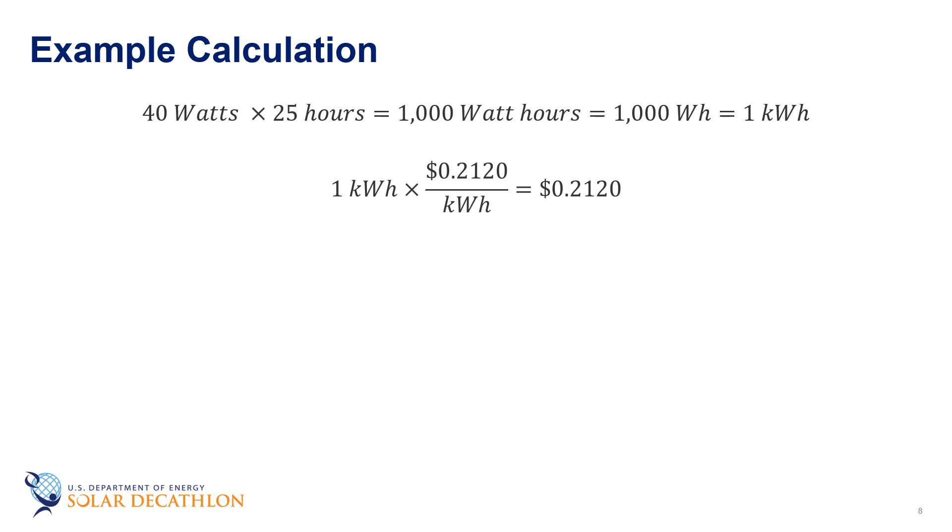So let's look at an example calculation. We'll use the same light bulb example that we previously used, a 40-watt light bulb operating for 25 hours. Again, by multiplying 40 watts times 25 hours, we get 1,000 watt hours or 1 kilowatt hour. Let's assume the price of electricity in our state is 21.2 cents. We can now calculate the cost associated with the energy used by the light bulb over this period of time as 0.212 dollars or 21.2 cents.